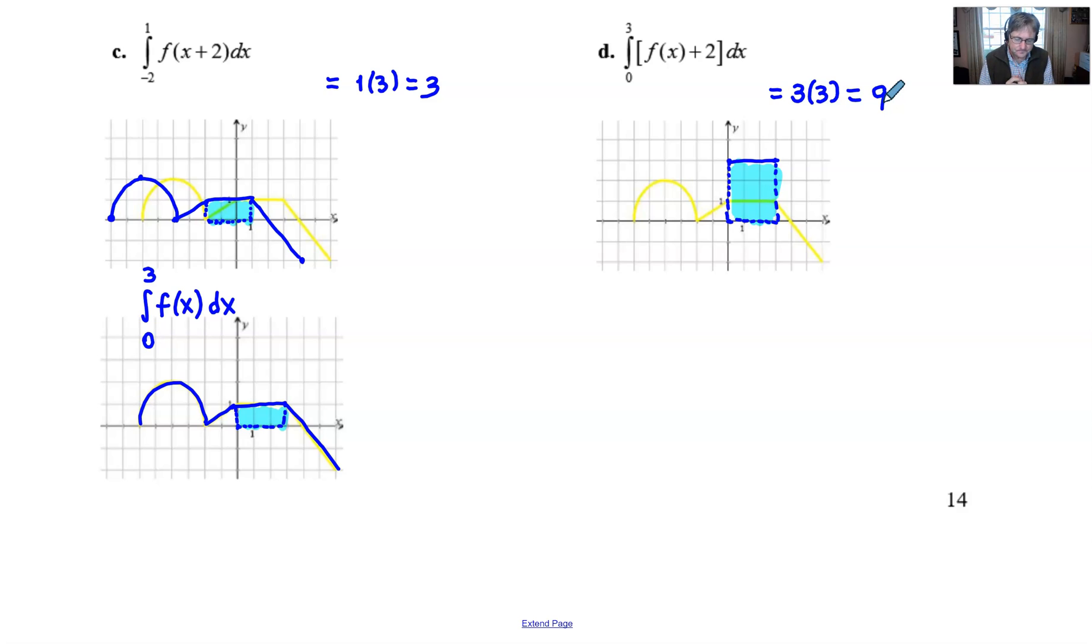The other way to do this - we're going to learn this formally here in a day or two - but you could have broken this apart into two separate integrals, two separate areas. That would mean you could just have found the integration of f(x) from 0 to 3, which you can see here was 3 times 1, or 3.